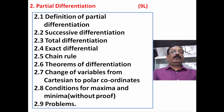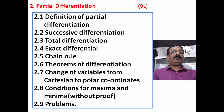Chapter number 2 is Partial Differentiation. In this chapter the first part is partial differentiation, which you may already know from previous study. Then second part is successive differentiation, total differentiation, exact differentiation, and chain rule. Point number 6 is the theorem of homogeneous functions — there are two theorems, first and second, which are helpful to understand problems in physics. Then change of variables from Cartesian to polar coordinates. Point number 8 covers conditions for maxima and minima without proof. After completion of all these eight points, we will solve problems regarding partial differentiation and integration.